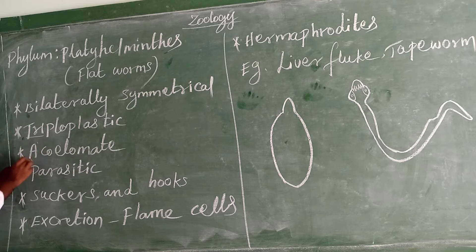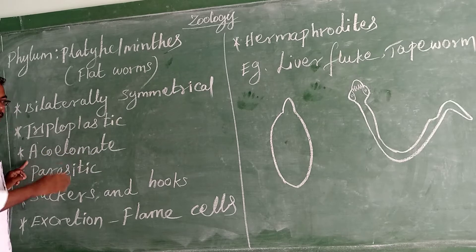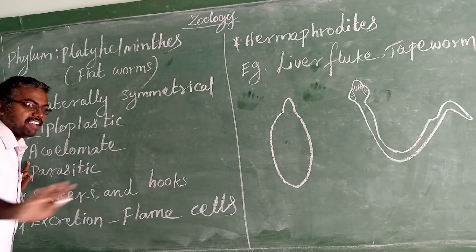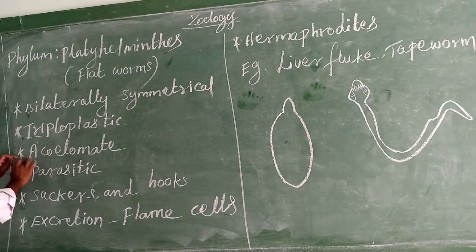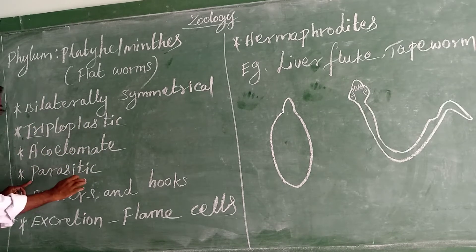They are Acoelomate — there is an absence of coelom inside the body. There is no cavity, which is why they are called Acoelomate.